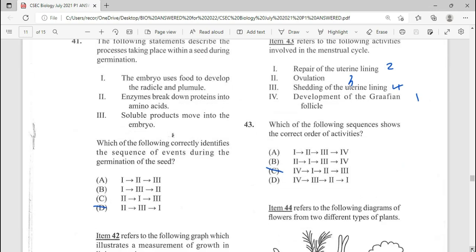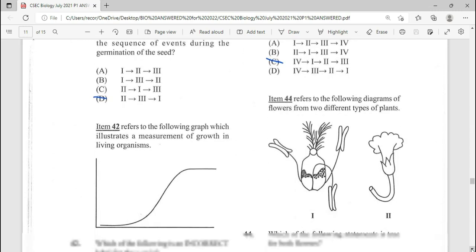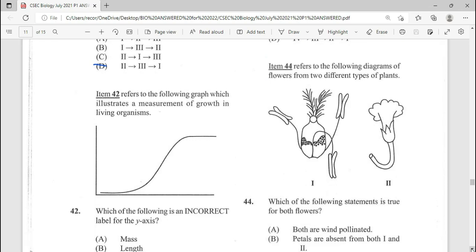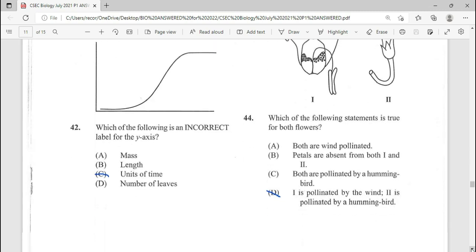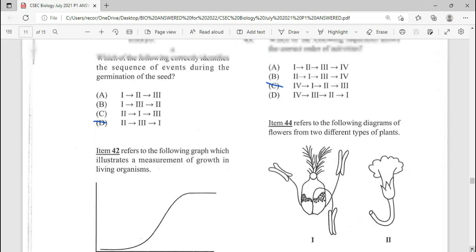41, the following statement describes a process taking place within a seed during germination. This is a repeated question. Our answer there being D. Please feel free to pause the video at any time to read at your speed. Item 42 refers to the graph, which illustrates a measurement of growth in living organisms. Sigmoid growth curve there. Which of the following is an incorrect label for the y-axis? Repeated question. C there being our answer, unit of time.